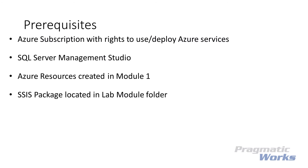Before we get into the specific tasks we'll be accomplishing in this lab, let's discuss what you'll need before we start. First, you'll need an active Azure subscription with rights to use and deploy Azure services. You'll need SQL Server Management Studio, as we'll be interacting with the integration catalog. You'll need to make sure you completed Lab Module 1, as it will deploy all the servers and resources accessed by our SSIS package. Finally, you'll need the SSIS package to upload to your Azure SQL database SSIS DB, which should be located in the lab module 2 folder.